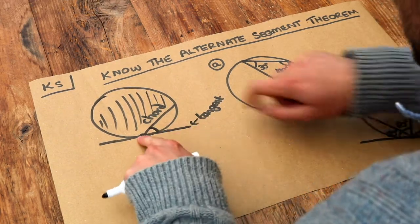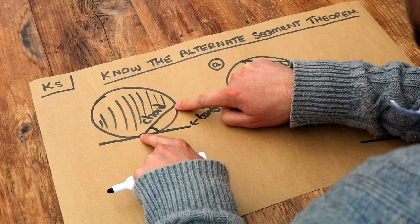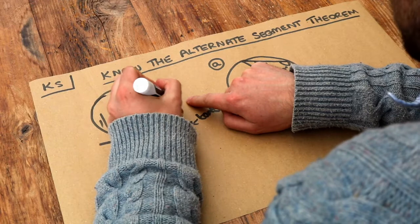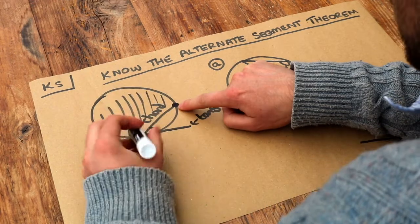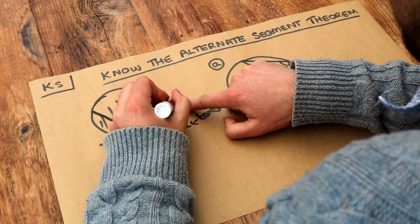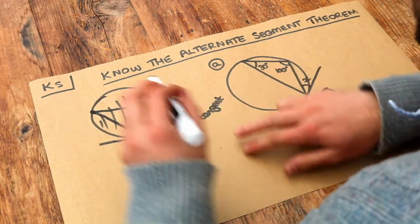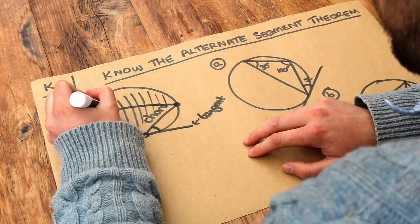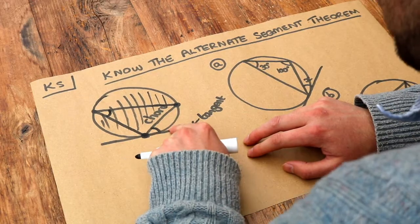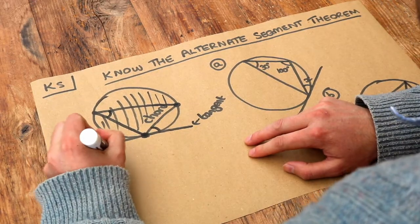What the alternate segment theorem says is that the angle between the chord and tangent is the same as the angle in the segment. What I mean by the angle in the segment is that if we take two points at the end of the chord and fire into the circle from those points so that we meet at the circumference, that angle where we meet is the same as the angle between the chord and the tangent. This is known as the alternate segment theorem.